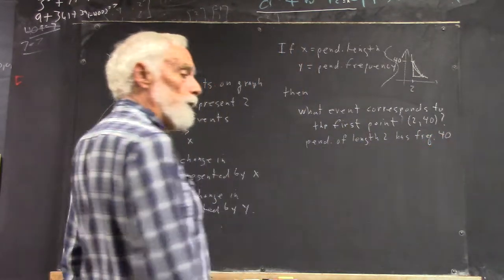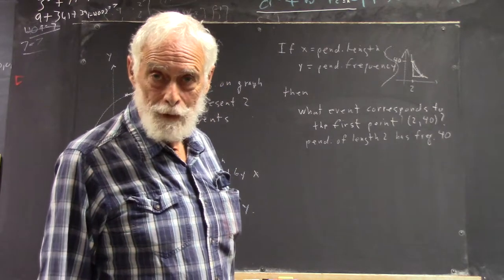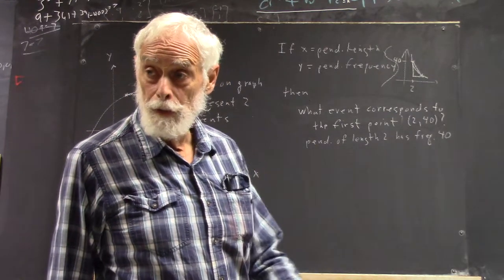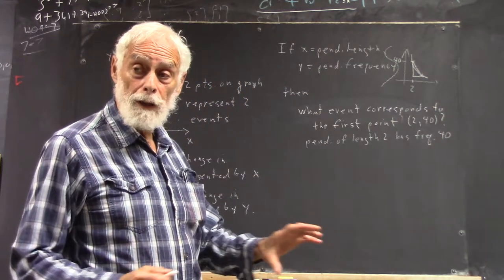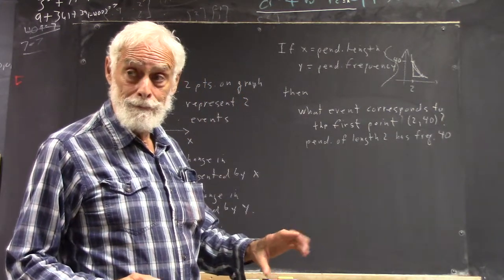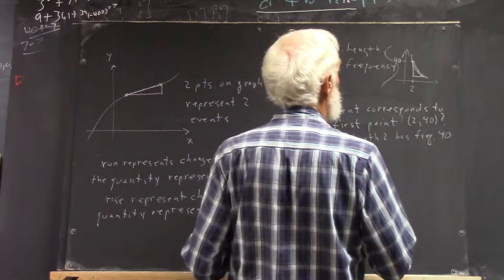And they're going to be units. You want to write the units down if you have the units. For brevity, I'll just write down the numbers. We always want to write down the units if they're present. Now, if that point is 2, 40, what do you estimate this second point is?